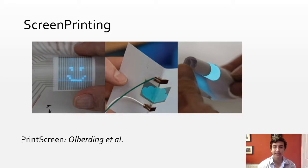In PrintScreen, Olberding et al. introduced custom shaped electroluminescent displays using screen printing techniques. This allows for fabrication of displays on irregular substrates, including those that can be bent or folded.